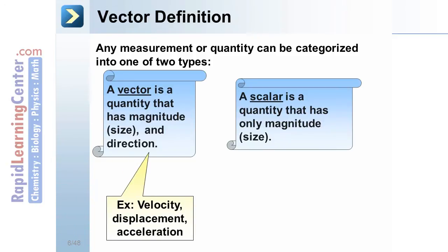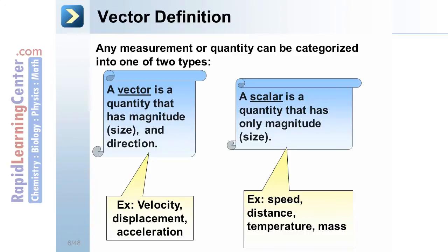Examples of vectors include velocity, displacement, and acceleration. Examples of scalars include speed, distance, temperature, and mass, all of which have no direction.